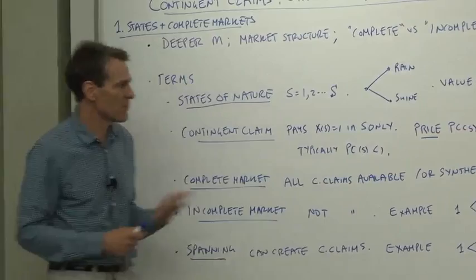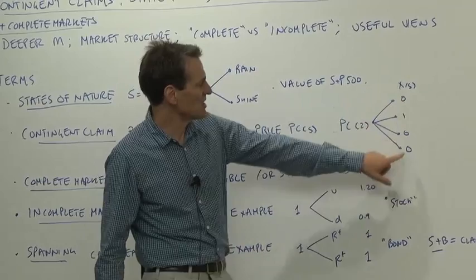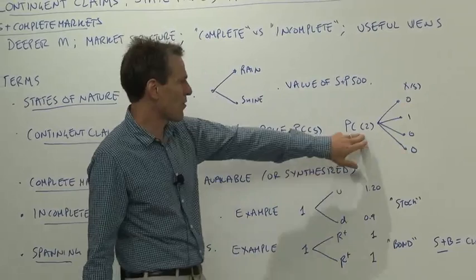So for example, I drew a case here where there's four possible states. The contingent claim to state two pays one unit in state two, nothing in any other state, and it has a price - contingent claims price PC of two.